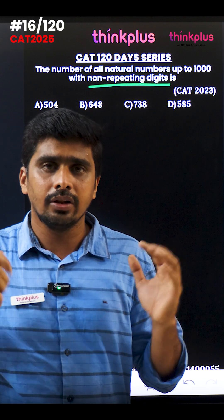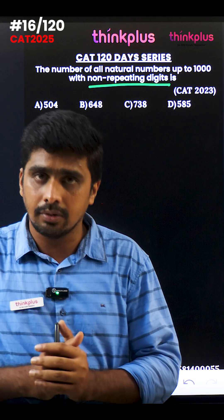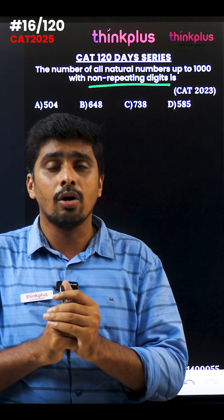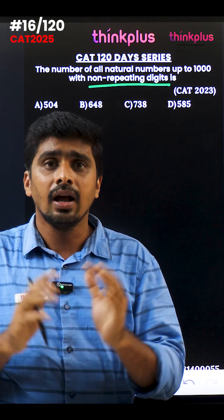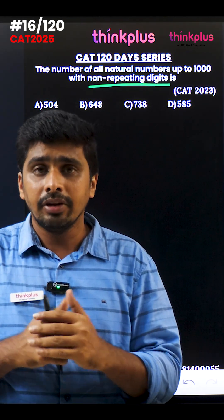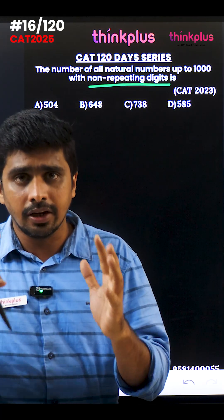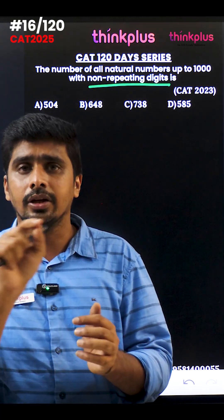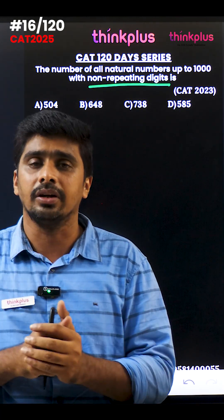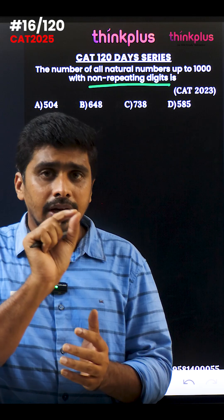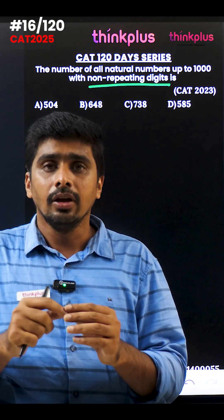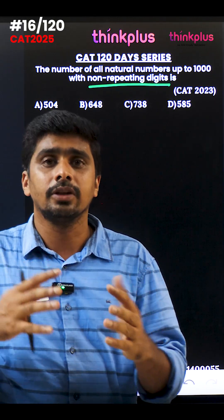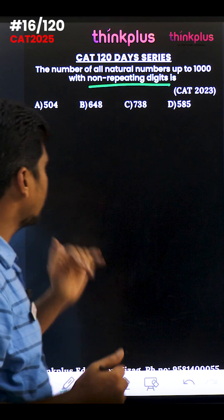Let's look at this CAT 2023 question — a very interesting question. From one to 2000, how many numbers are there without repeating any digits? For example, 783 is valid since no digit is repeated, but 788 is not valid because 8 is repeated. So let's find out how many numbers exist without repetition of digits.